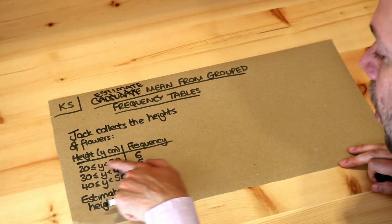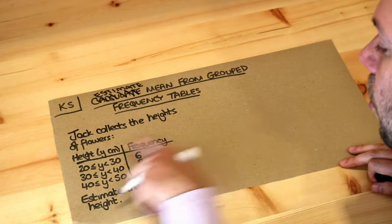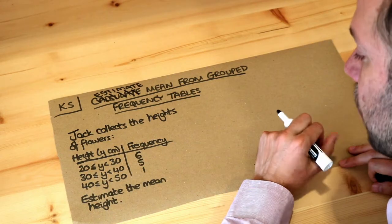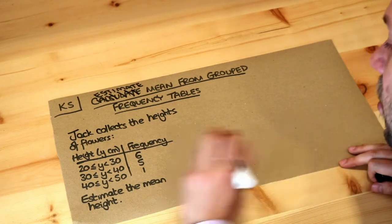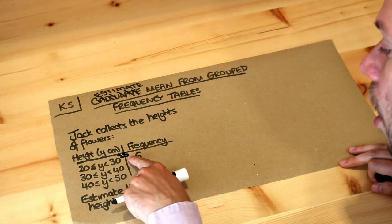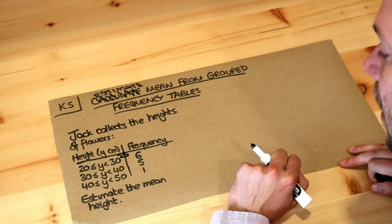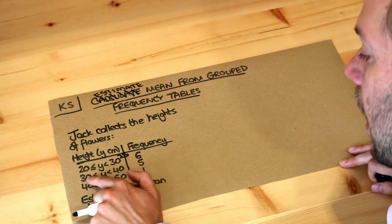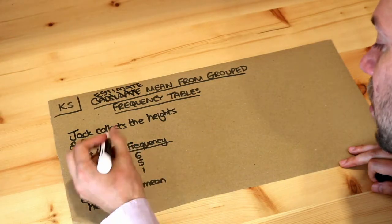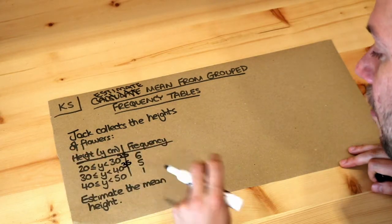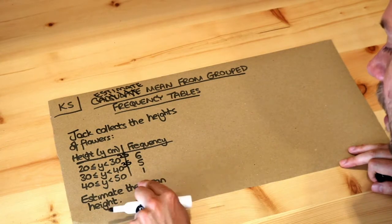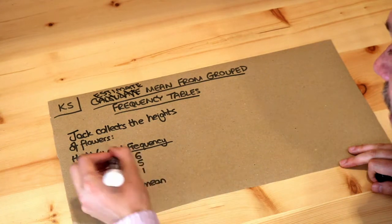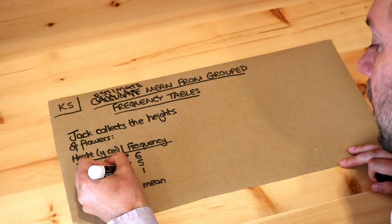Those six flowers with a height between 20 and 30 centimetres — we don't know their exact height, but on average we expect them to be halfway between 20 and 30 centimetres, so we use a value of 25 to represent them. Similarly, for the 30 to 40 interval the average height is 35, and for that one flower in the 40 to 50 range, we use 45.